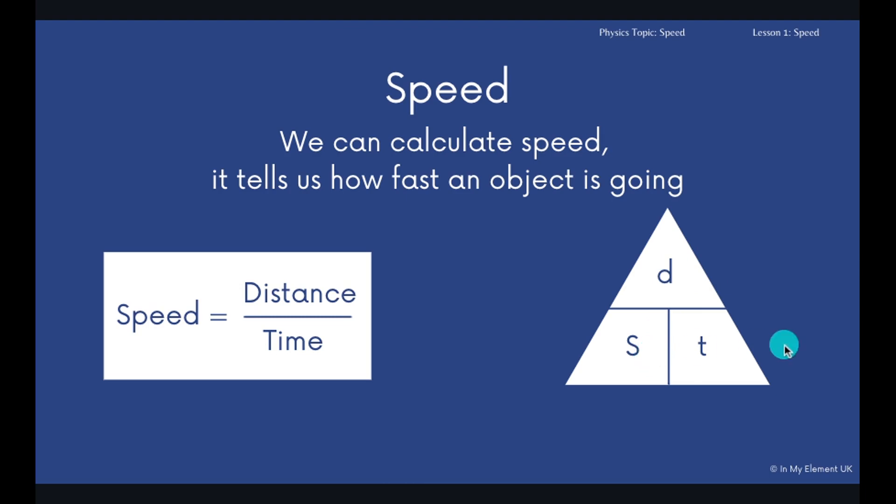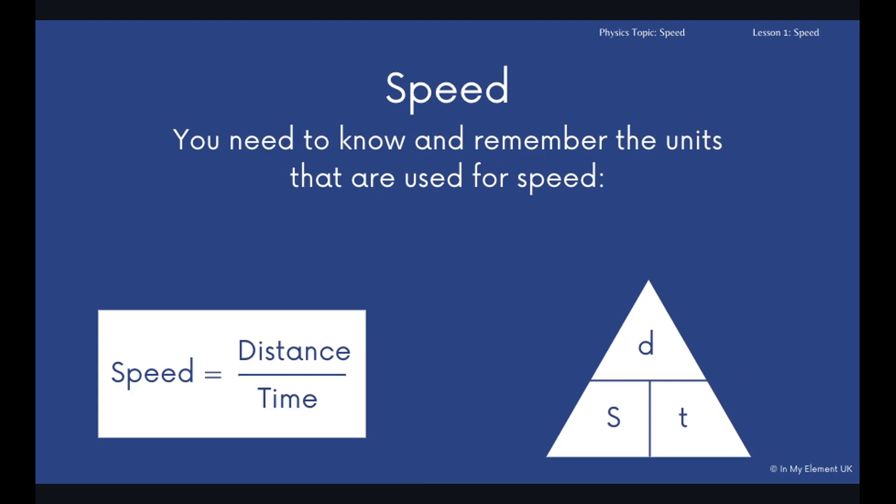You will also need to know the units that are used for speed, and they can vary depending on the object. You will quite often have meters per second. That will mean that the distance has been measured in meters, the time has been measured in seconds, so therefore the speed is calculated in meters per second.